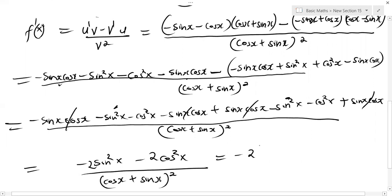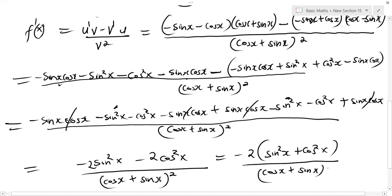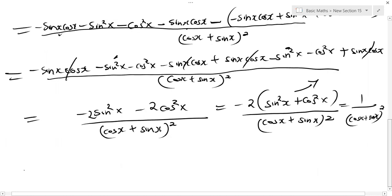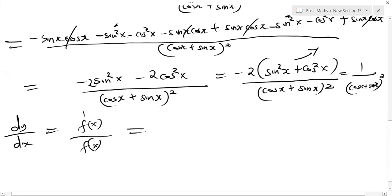Factoring out minus two, we have sine squared x plus cos squared x. From the trigonometric identities, sine squared x plus cos squared x equals one. So f prime of x simplifies to minus two over cos x plus sine x, squared. Now remember, dy/dx equals f prime of x divided by f(x).